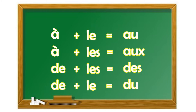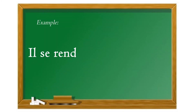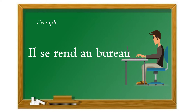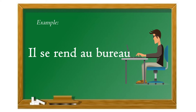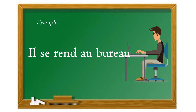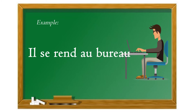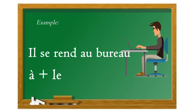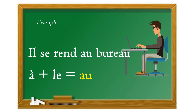Par exemple, on peut dire « il se rend au bureau », c'est-à-dire, on pourrait dire « il se rend à le bureau ». Si on fait la contraction, « à » plus « le » donne « au » — donc au bureau.